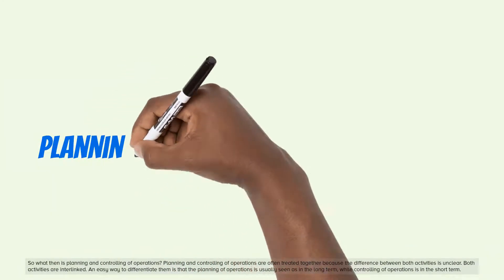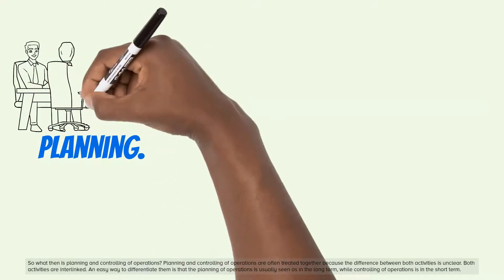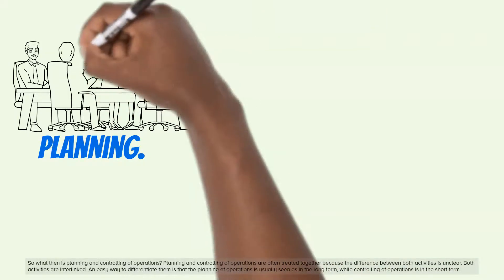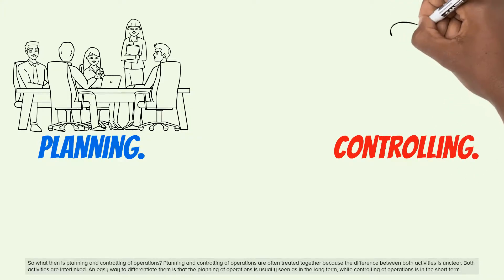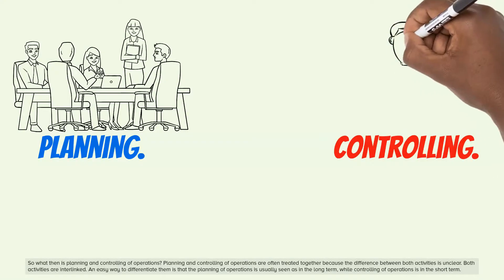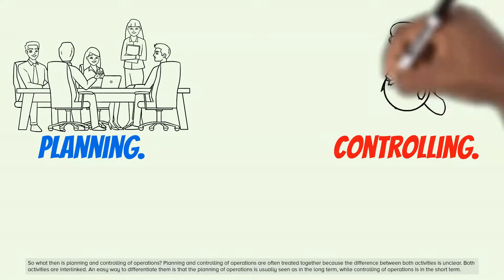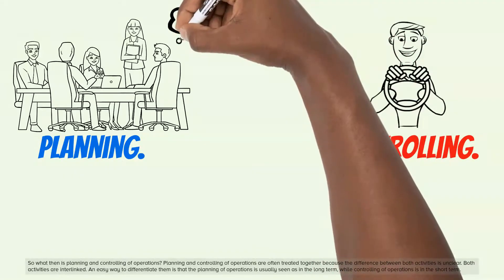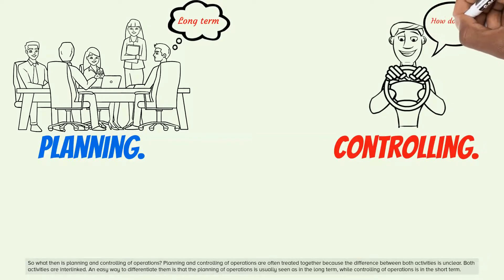So what then is planning and controlling of operations? Planning and controlling of operations are often treated together because the difference between both activities is unclear. Both activities are interlinked. An easy way to differentiate them is that the planning of operations is usually seen as long term, while controlling of operations is short term.